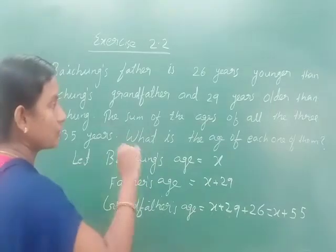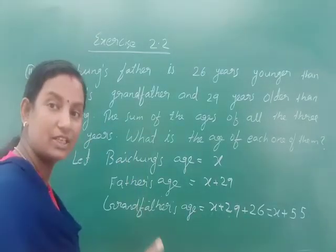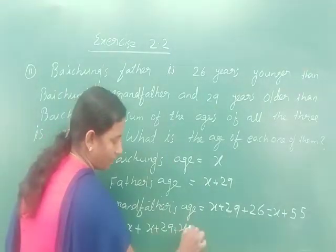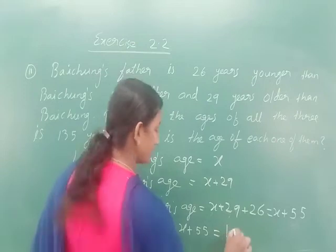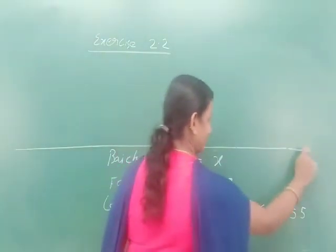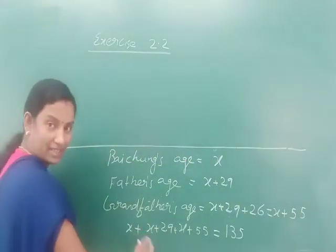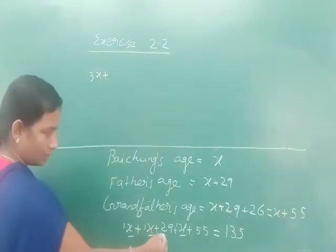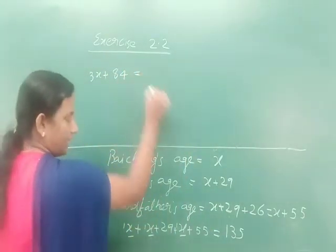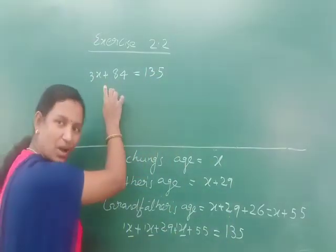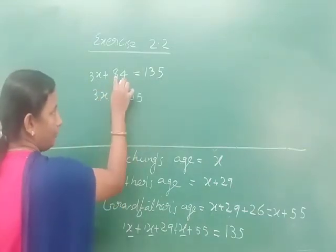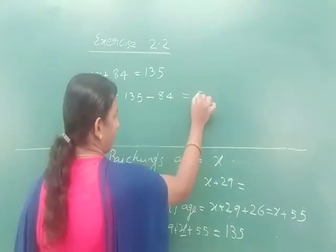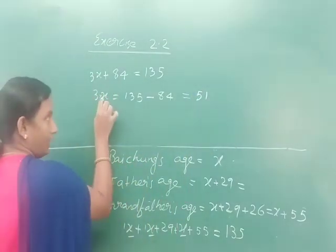The sum of all three ages is 135. So: x + (x+29) + (x+55) = 135. Adding like terms: 3x + 84 = 135. Therefore, 3x = 135 - 84 = 51.